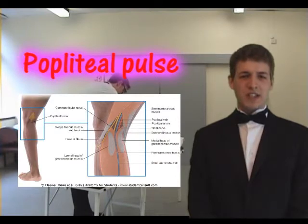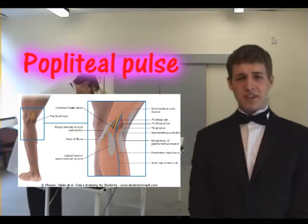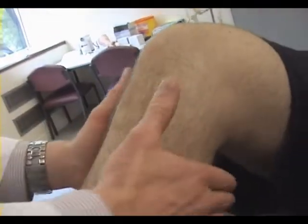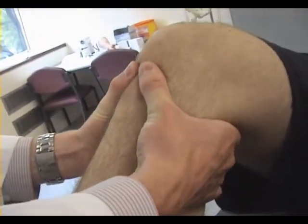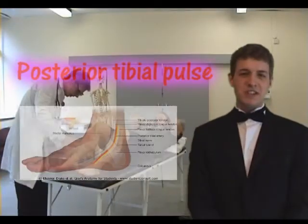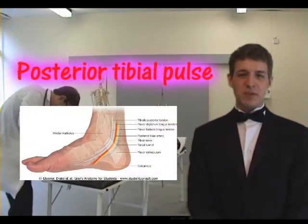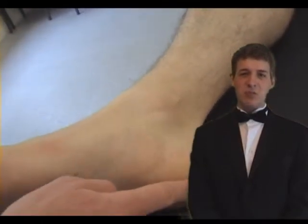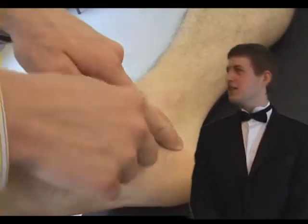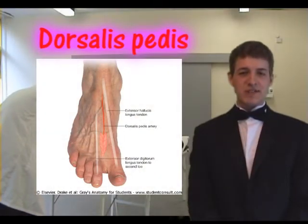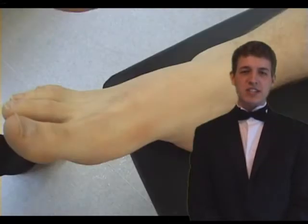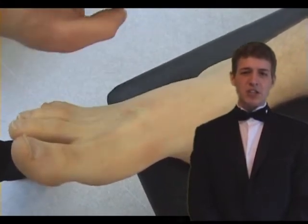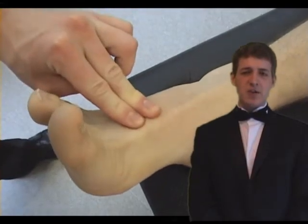The popliteal pulse is located deep within the popliteal fossa. Be aware that palpation may be uncomfortable for the patient. The posterior tibial pulse is best felt when the foot is inverted and it is located halfway between the calcaneal tuberosity and the medial malleolus. Finally, dorsalis pedis is felt just lateral to the tendon of extensor hallucis longus. Asking the patient to point their big toe to the head accentuates the tendon, allowing easy location of the pulse.